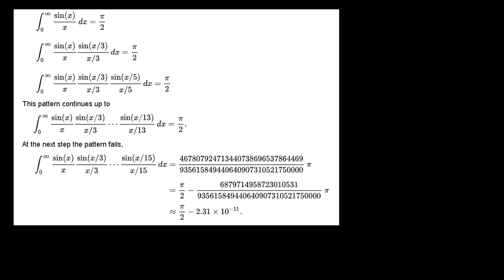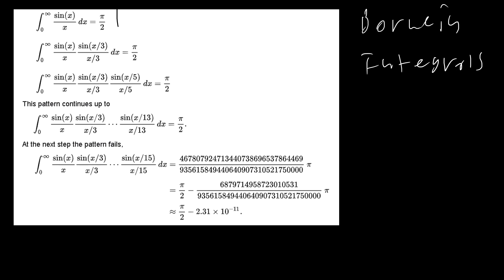These integrals are called the Borwein integrals. Here's part of the Wikipedia page on these integrals, and the cool thing about them is that the first — I believe like six or so — all go to pi over two, and after that the value is off by only a small amount. The first integral is the Dirichlet integral, and then each integral after that you're multiplying by sine of x/3 over x/3, then sine of x/5 over x/5, all the way up to sine of x/13 over x/13. They will all go to pi over 2, but once you hit sine of x/15 over x/15, it becomes pi over 2 minus an incredibly small number, as you can see right here.